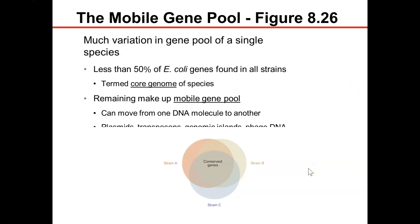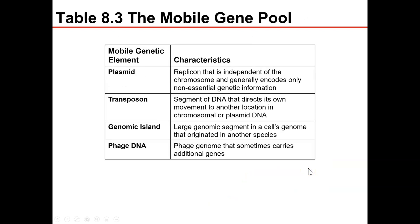A plasmid is a replicon that is independent of the chromosome and generally encodes non-essential but beneficial genetic information. Transposons are segments of DNA that can move from one location to another within a chromosome, or from chromosome to plasmid, or plasmid to chromosome.